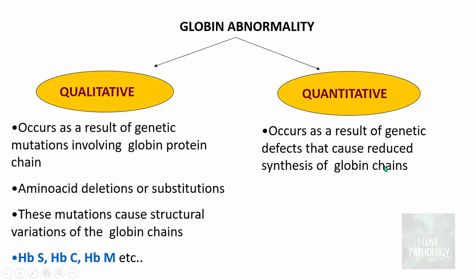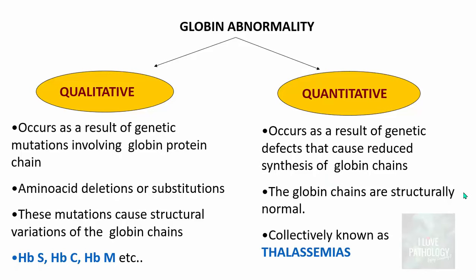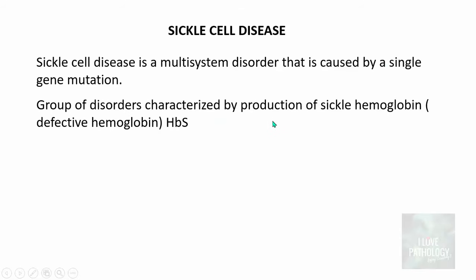In contrast, quantitative hemoglobinopathy occurs as a result of genetic defects that result in reduced synthesis of globin chains, and the globin chains are structurally normal. They are normal structurally but there will be reduced synthesis of globin chains. Collectively these are referred to as thalassemias. In this tutorial I will be discussing only about sickle cell disease, which is a multi-system disorder caused by a single gene mutation, characterized by production of sickle hemoglobin — the defective hemoglobin HbS.